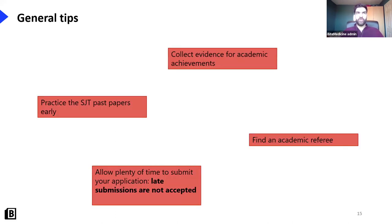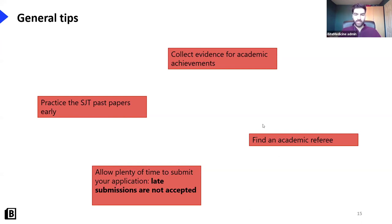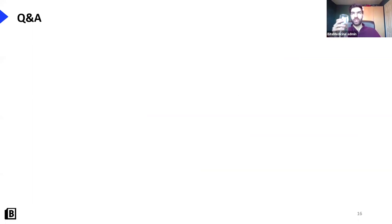Some general tips before we move to Q&A: collect all your evidence for academic achievements — in particular publications — and make sure you have a PubMed ID. Every application needs references, so make sure you have good relationships with clinical supervisors, GP placement supervisors, or university contacts. The SJT forms half your marks — 50 out of 100 — so really spend some time on it and start practising now if you haven't. And don't leave the application to the last minute because Oriel will almost certainly crash.